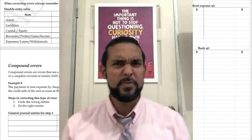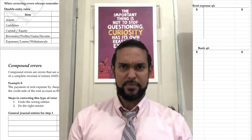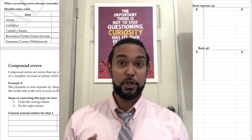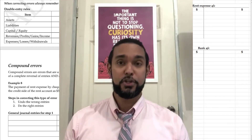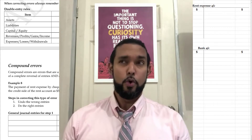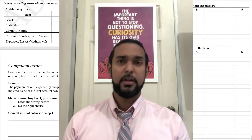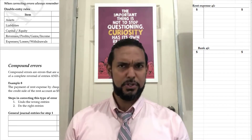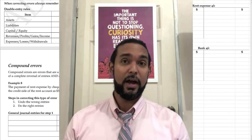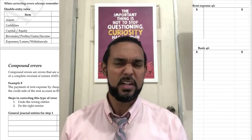So for those of you keeping track, we've done seven types of errors so far. We've done errors of omission, commission, principle, original entry, transposition, compensating errors, and complete reversal of entries.